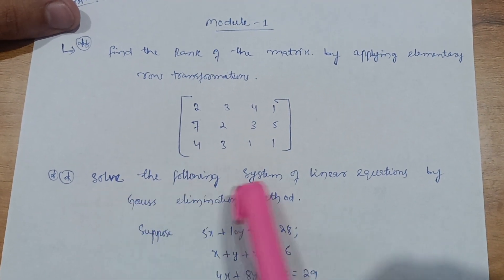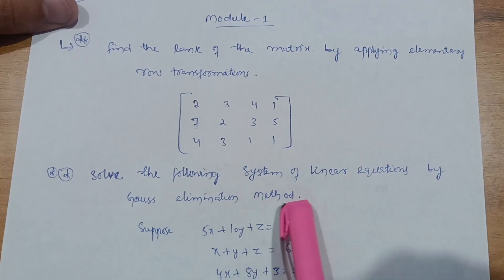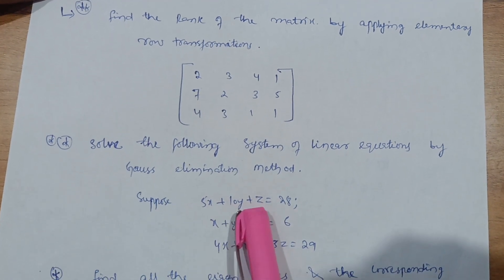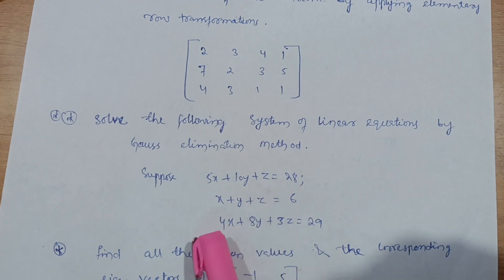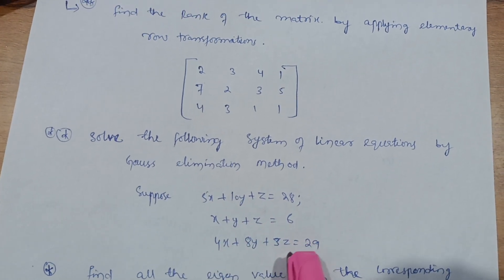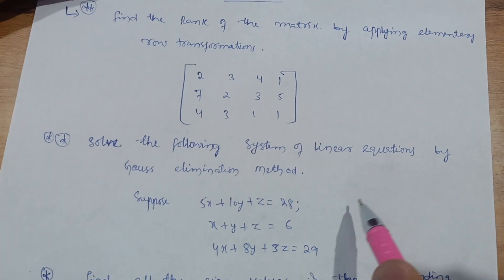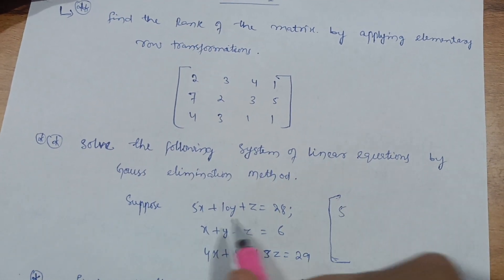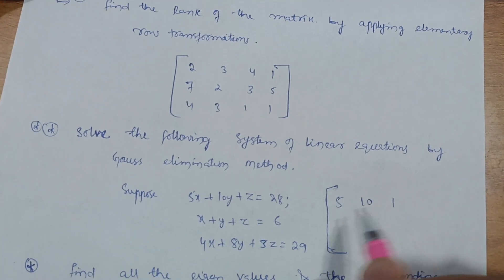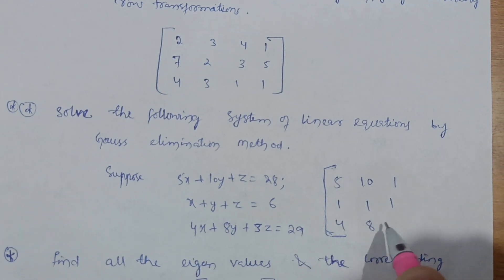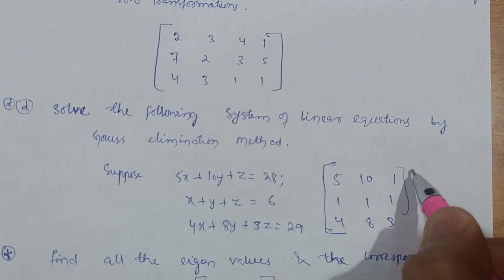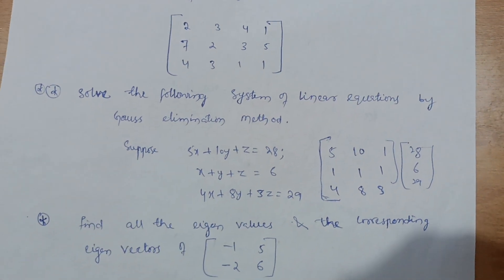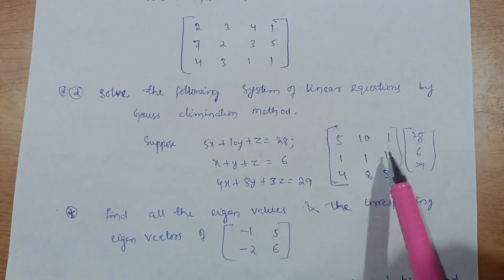The second concept is solving a system of linear equations by the Gauss elimination method. For example: 5x + 10y + z = 28, x + y + z = 6, 4x + 8y + 3z = 29. You write this as a matrix with coefficients [5, 10, 1 | 28], [1, 1, 1 | 6], [4, 8, 3 | 29], then make the lower triangular entries zero to solve the system.